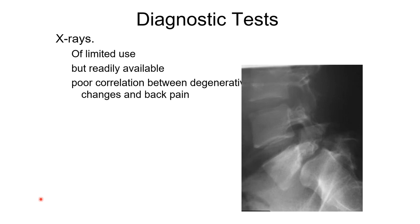X-rays are of limited use but readily available. They have a poor correlation between degenerative changes and back pain because most of us as we age all have degeneration. But here's an example of normal vertebrae where L5 has slipped forward — drawing a line on the back of S1 you can see L5 has slipped forward by 50 percent. This is due to a defect in the pars interarticularis — you can see the pedicle, superarticular process, and the inferarticular process left behind at the defect. This is an example of a spondylolytic spondylolisthesis.